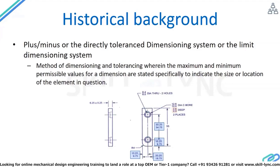When we say coordinate dimensioning, what we mean is you are not going to dimension the different features in the part; instead you are going to dimension the coordinates of different features. For example, there is a counter bore drill here — we dimension the center point of the drill from a reference coordinate. You can see clearly it is 20 plus or minus 0.25. This is what is called coordinate dimensioning.